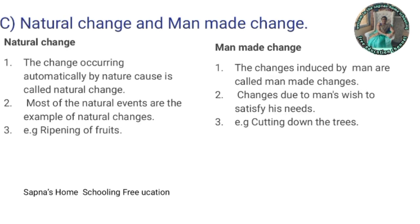C: natural change and man-made change. Changes occurring automatically by nature are called natural changes. Changes induced by man are called man-made changes. Most natural events are examples of natural changes, while man-made changes are due to man's wish to satisfy his needs. Example of natural change: ripening of fruits. Example of man-made change: cutting down trees.